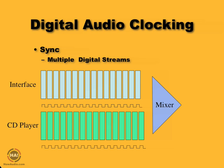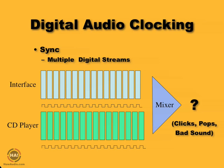We have a problem if we try to mix them together. If we feed both signals into a digital mixer, the digital mixer will say: I've got the interface's sample — where's the one from the CD player? It's not here yet. I don't know what to do — I'll spit out some clicks, pops, and bad sound. That's what happens when the digital mixer can't deal with a missing or repeated sample because the clocks are not synchronized.